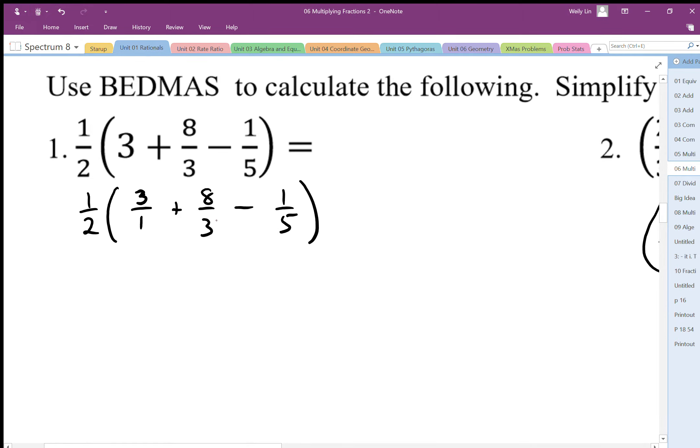I'm going to multiply here by 5 and 5. I need to show these factors. I'm going to multiply by 3 and 3, and here multiply by 15 and 15.